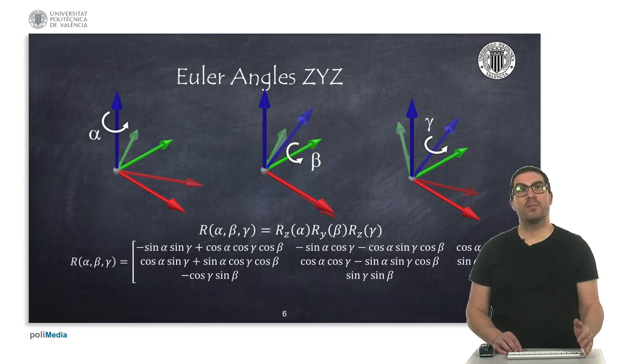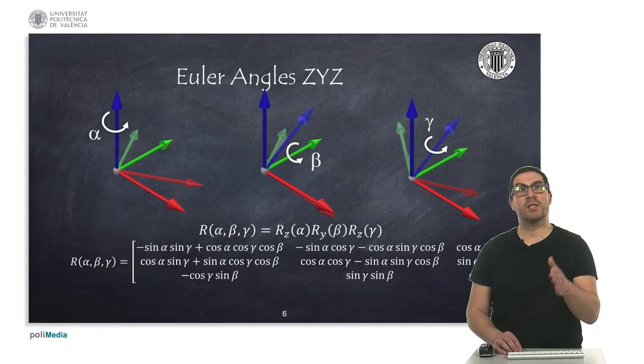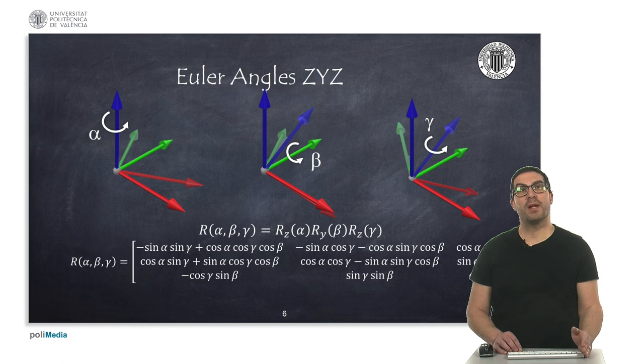So this implies a post-multiplication of a rotation matrix around Z, post-multiplication of a rotation matrix around Y, and then finally another post-multiplication around Z again.